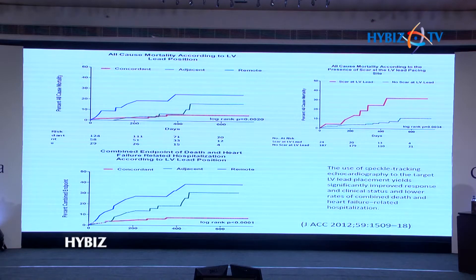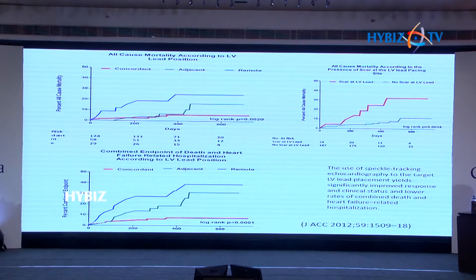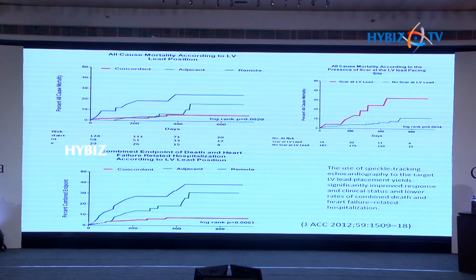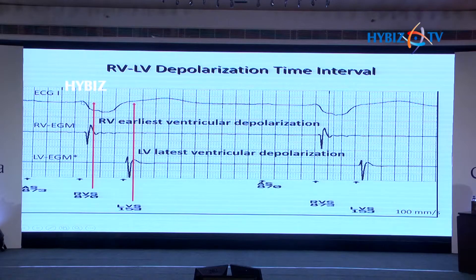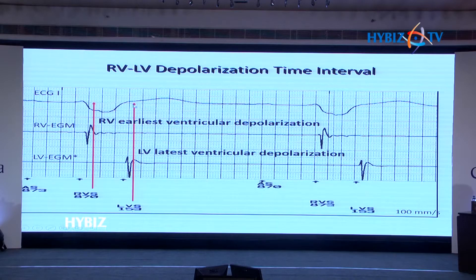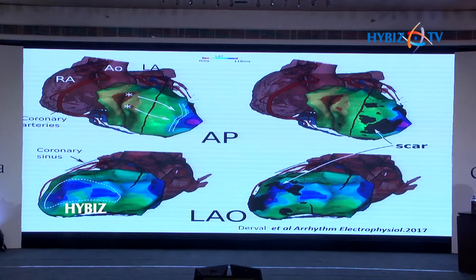If you don't implant the lead in the latest area of activation, please pull out the lead — it may take another half an hour but it's well worth it. About 5 percent of our practice we send patients for an epicardial procedure, not because we can't implant the LV lead but because we believe it won't electrically resynchronize that area. You look at the sensed bipolar electrogram indicating local electrical activation from the LV lead and ask the programmer to display the QRS — you should sense this local LV depolarization at the end of the QRS for optimal resynchronization.